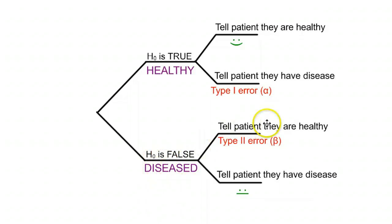If the null is false, they have a disease, and you tell them that they're healthy, you made a Type II error based on the way this problem is set up, and that means that somebody might have this severe disease and go undetected for a long time.